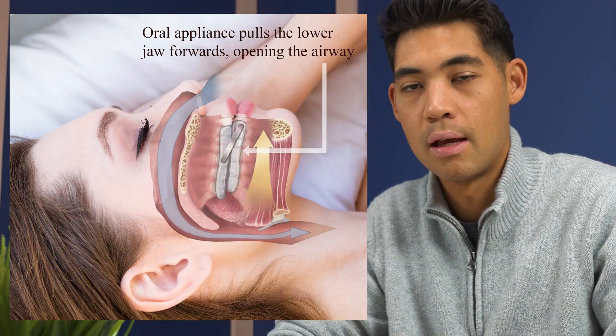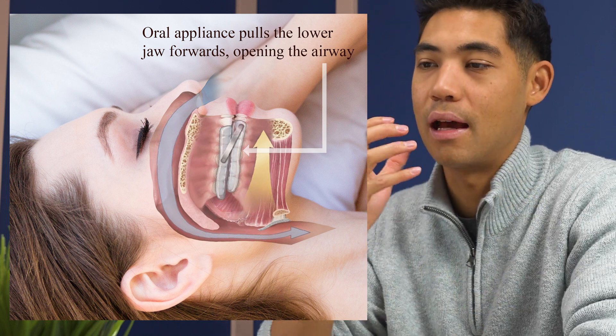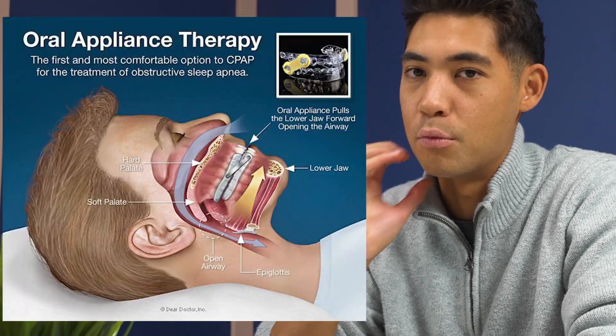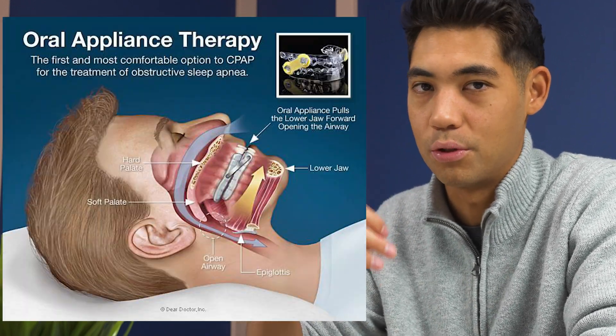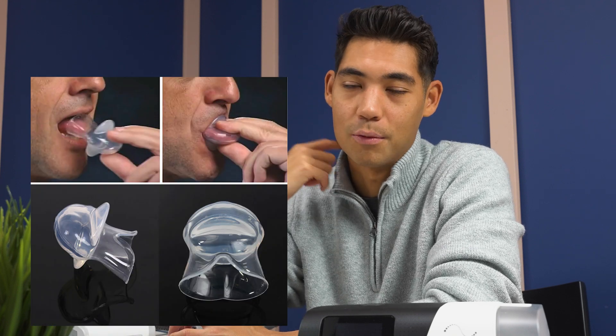There are other options besides CPAP. You can get a mandibular advancement device, or oral appliance, which repositions your jaw slightly forward so the tongue — connected to the lower jaw — doesn't hit the back of your throat. It looks like a mouth guard but positions your jaw to keep your airway open. An older option is a tongue retaining device, which brings your tongue almost out of your mouth to keep it from hitting the back of your throat.